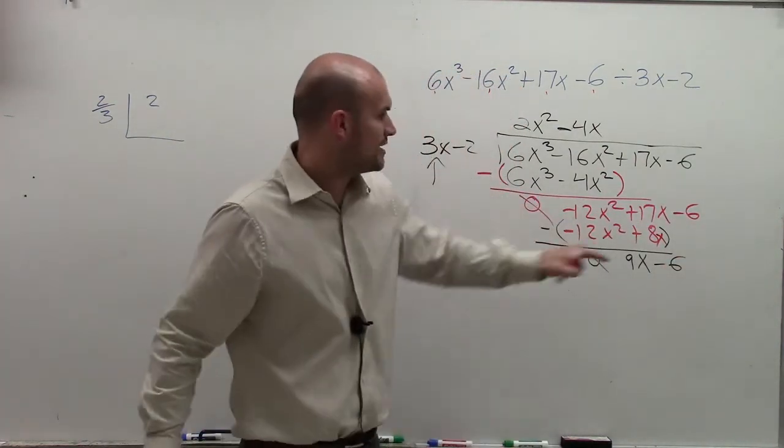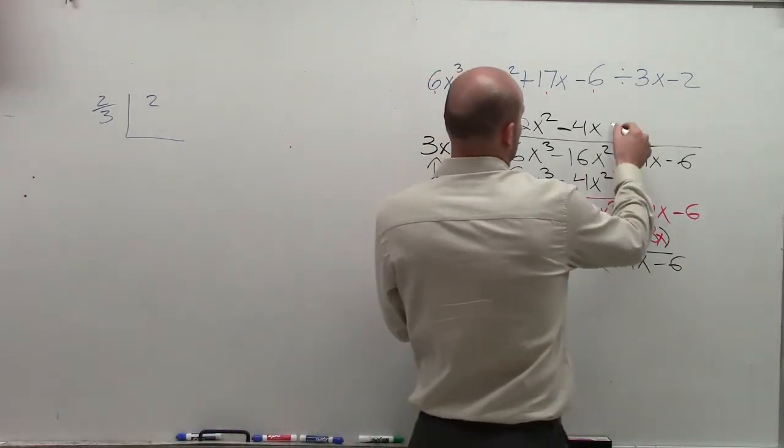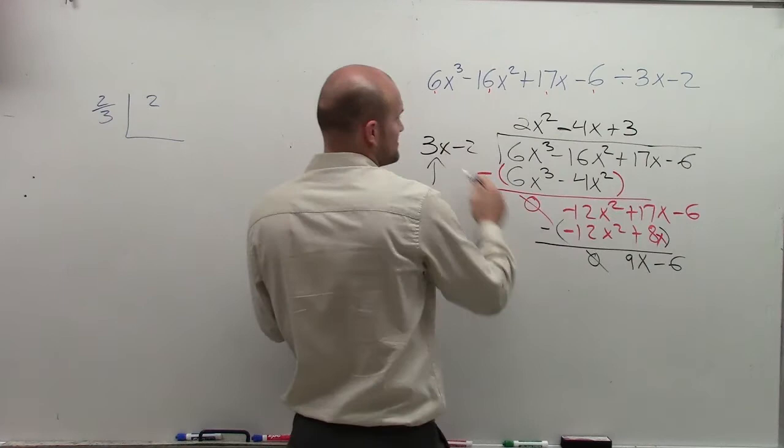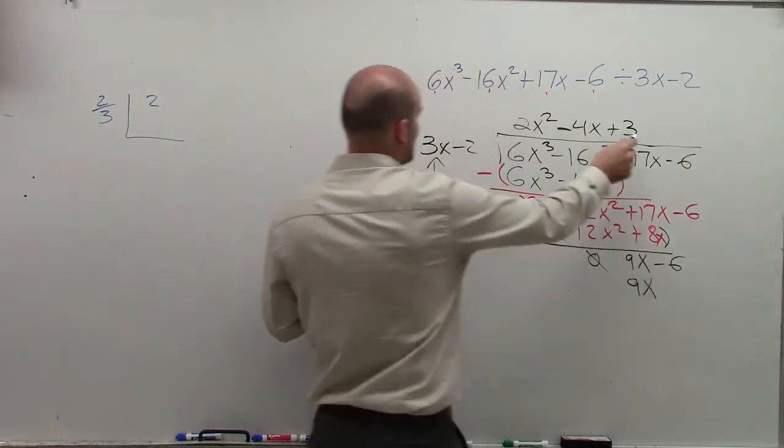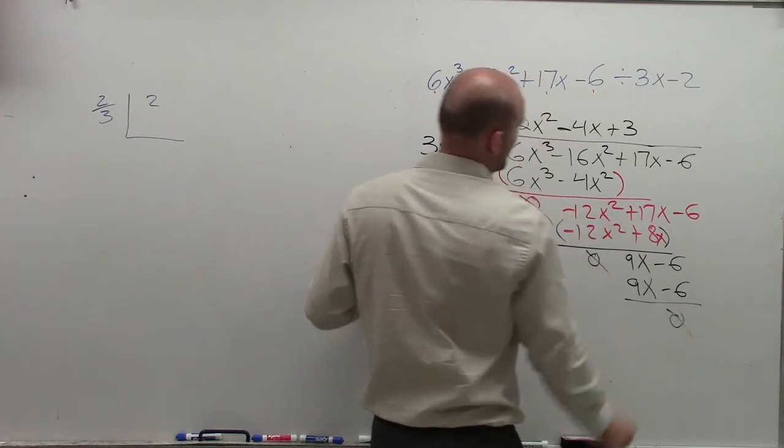So there's 3x divided into 9x. Of course it does. It goes in there 3 times, right? Plus 3. So 3 times 3x is 9x, and 3 times negative 2 is negative 6. Subtract the whole rows, and you get 0 again.